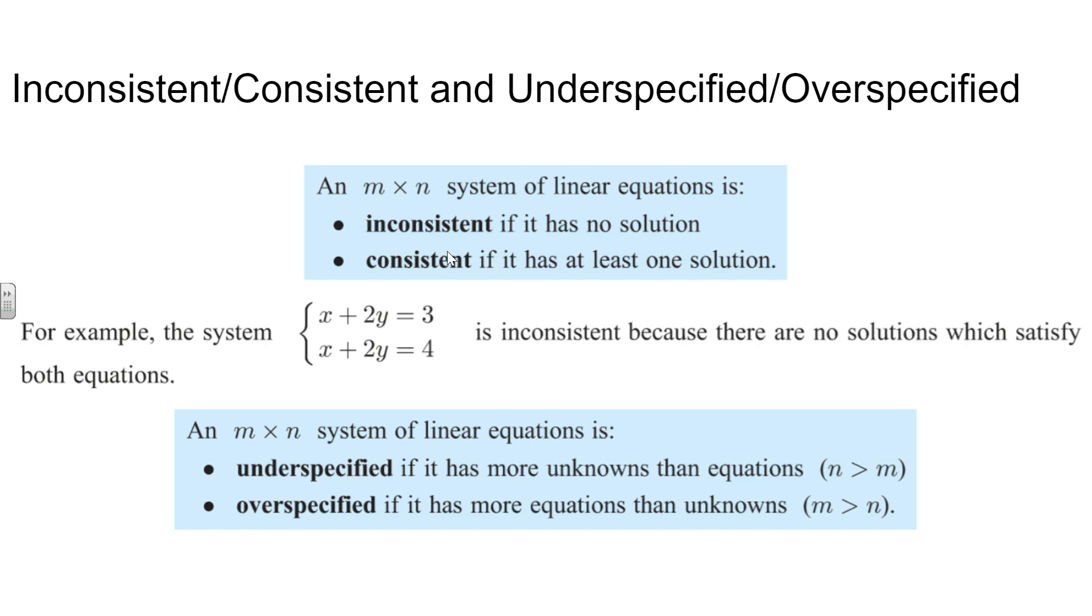But we can also look at whether it is consistent or inconsistent, and we say this would be an inconsistent system because if I were to try to solve this, notice the left sides are exactly the same, and the right side, the first one equals 3, the second one equals 4. That doesn't make any sense. It's not going to work. If I were to try to graph those lines, those lines would be parallel to one another.